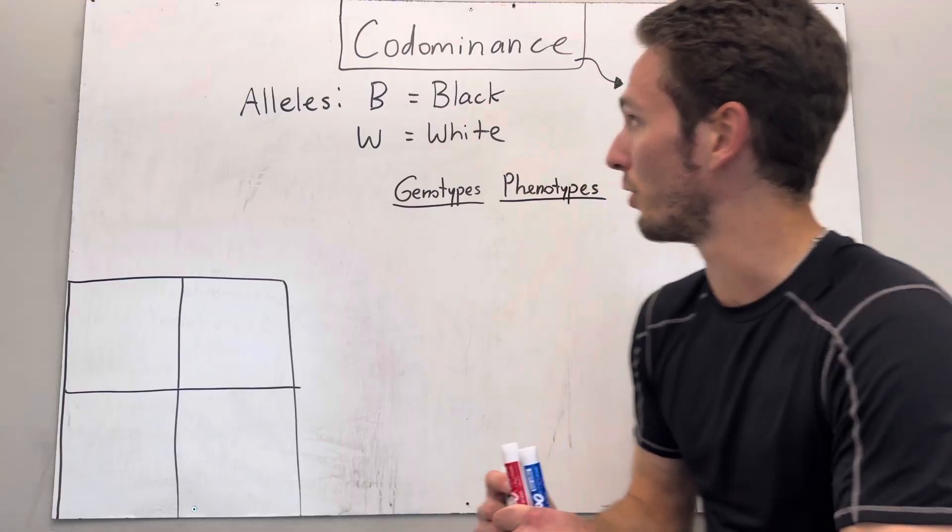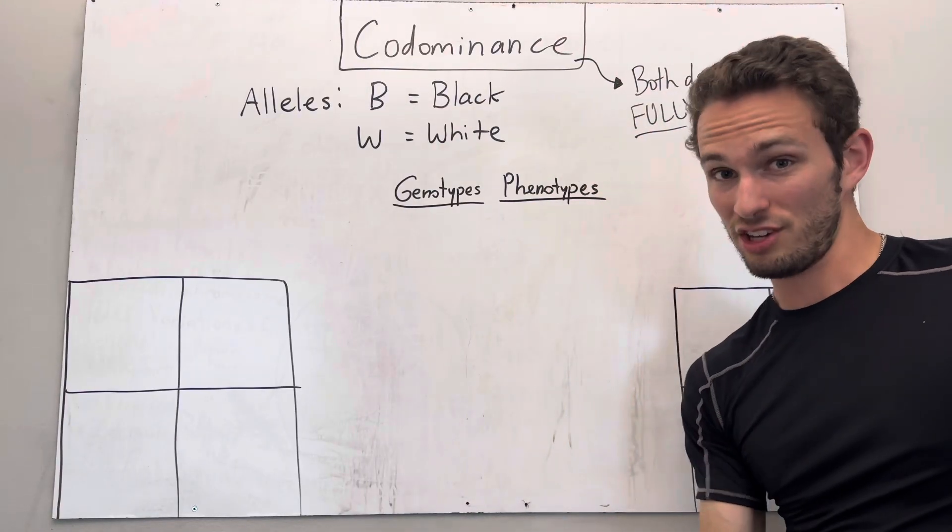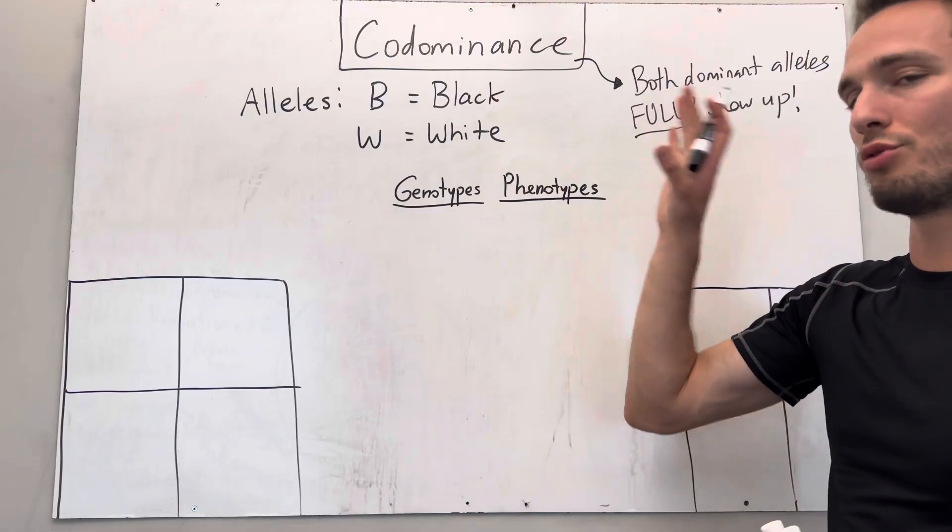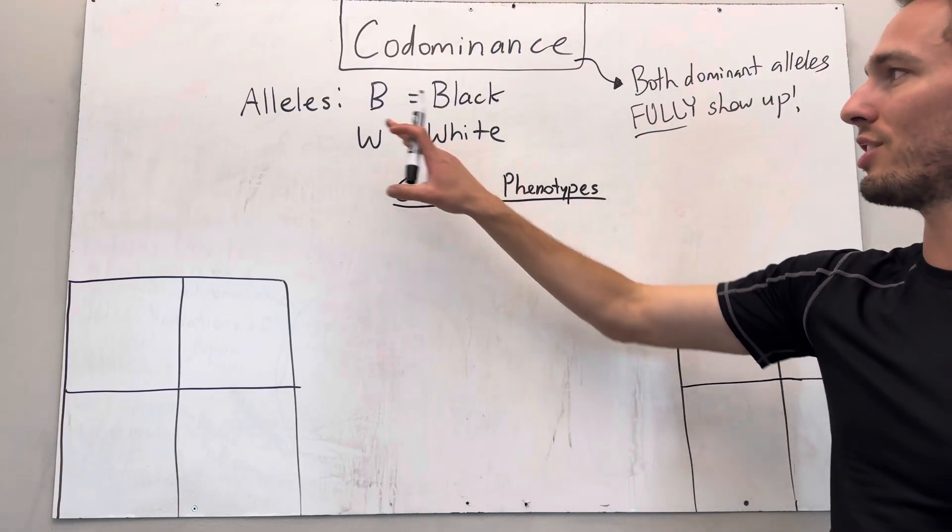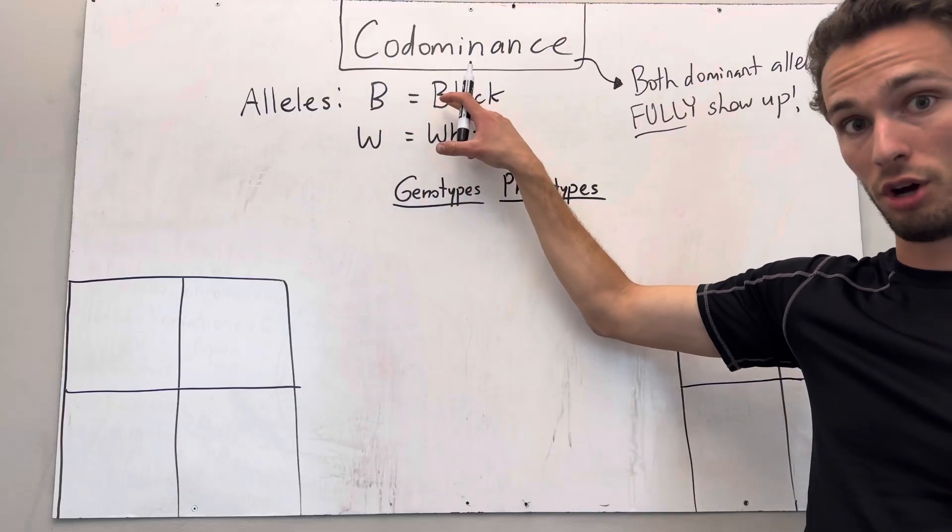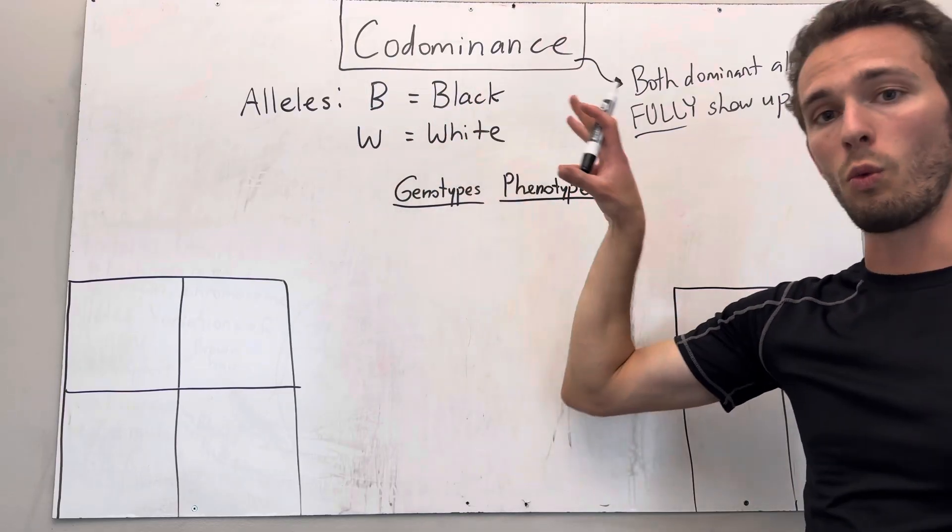For example, when we're talking about cats, some sorts of cats have co-dominance when it comes to their fur color. So I'm going to say we have alleles B, big B for black coat, or W for white coat.